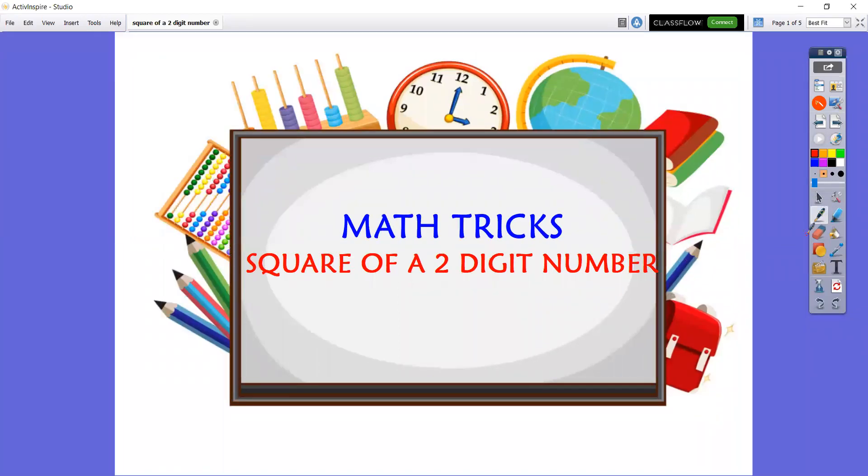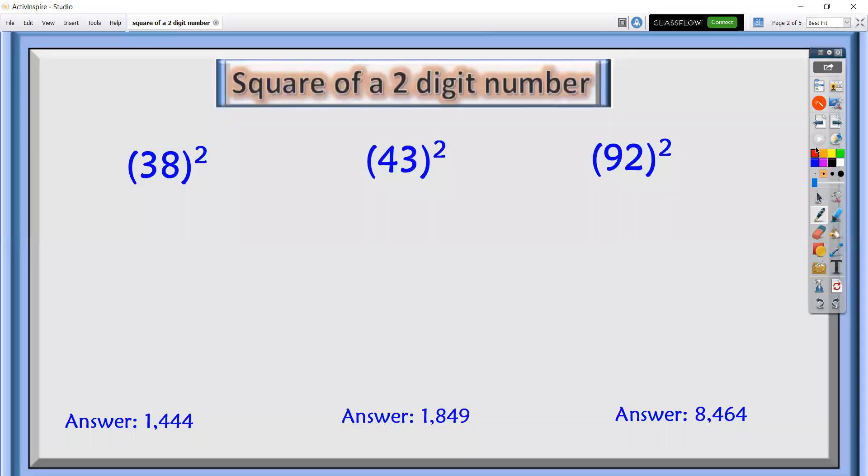We'll do another math trick where we will square a two-digit number. We have 38 quantity squared. Traditionally, we multiply 38 to itself to get the square of this number, but for now we will do a shortcut method.